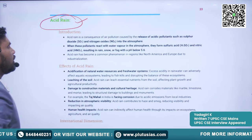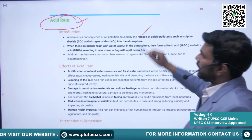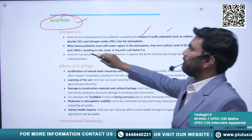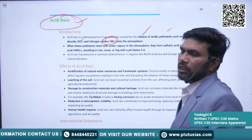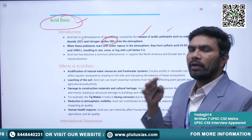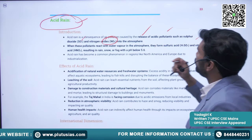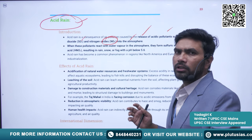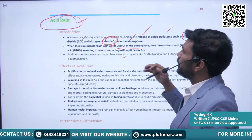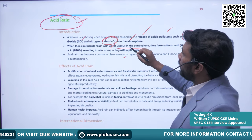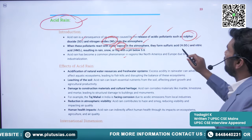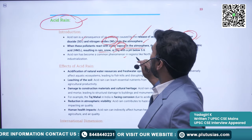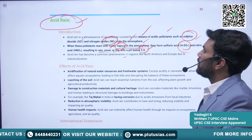The third important component is acid rain. Acid rain is a consequence of air pollution caused by release of acidic pollutants — sulfur dioxide and nitrogen oxides — into the atmosphere. When these pollutants react with water vapor in the atmosphere, they form sulfuric acid and nitric acid, resulting in rain, snow, or fog with a pH below 5.6.